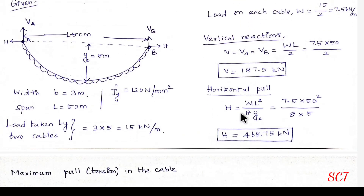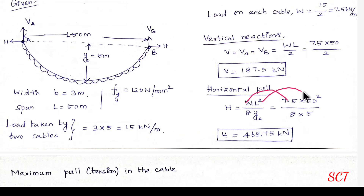Next, the horizontal pull H = WL² / (8 × yc). Substituting W = 7.5, L = 50, and yc = 5: H = 468.75 kN.